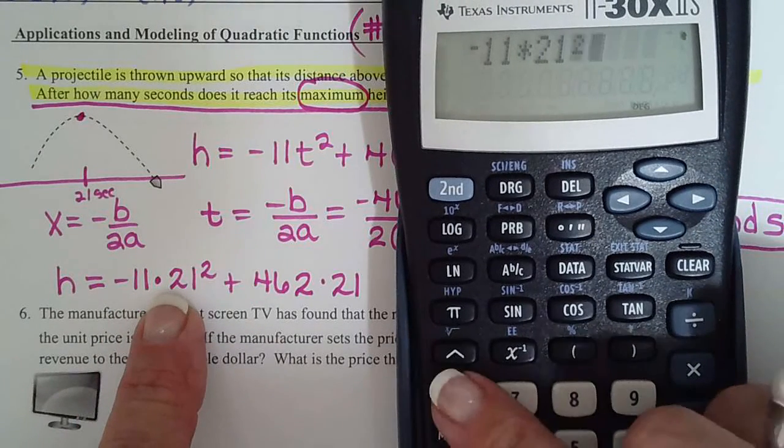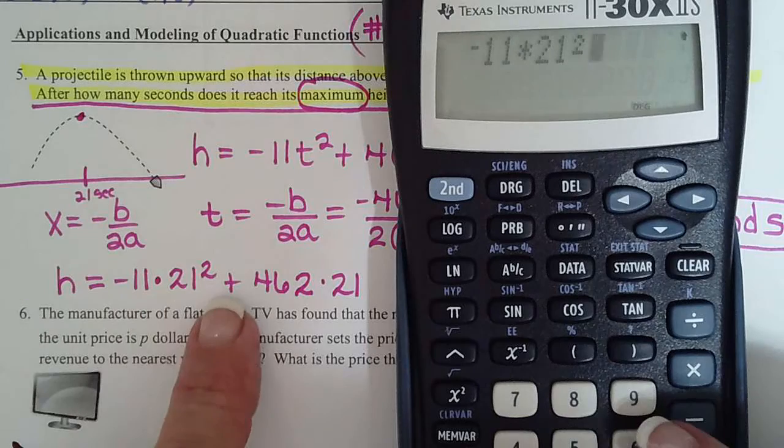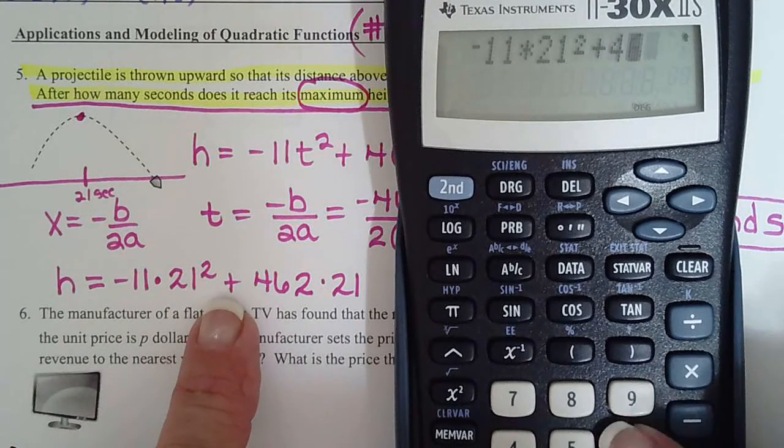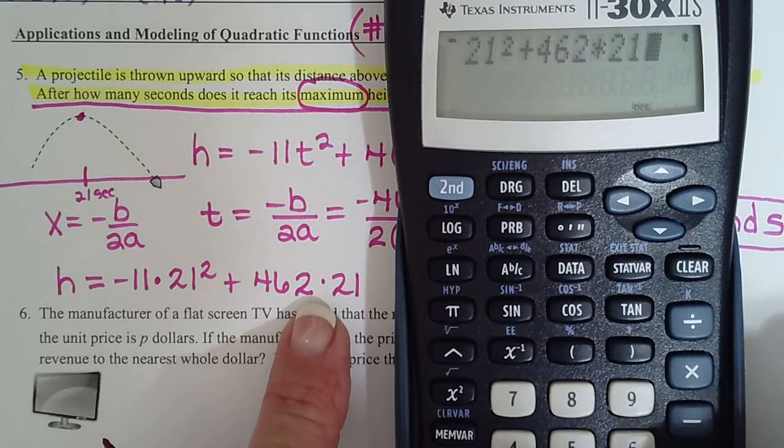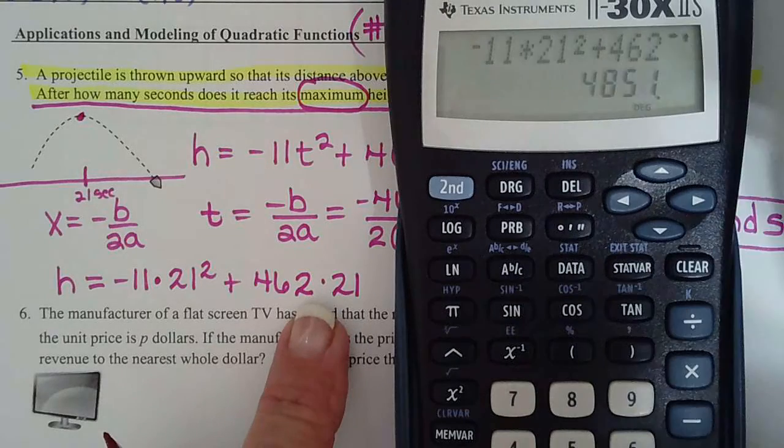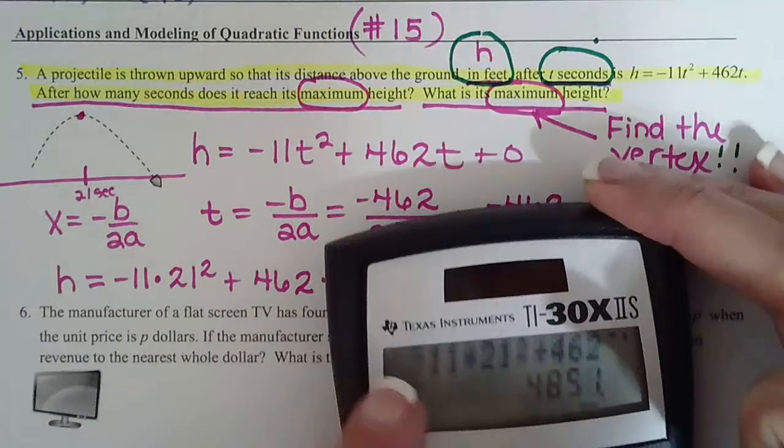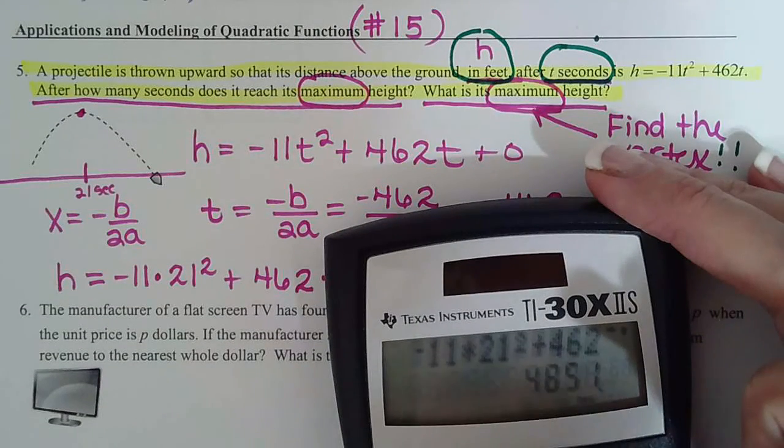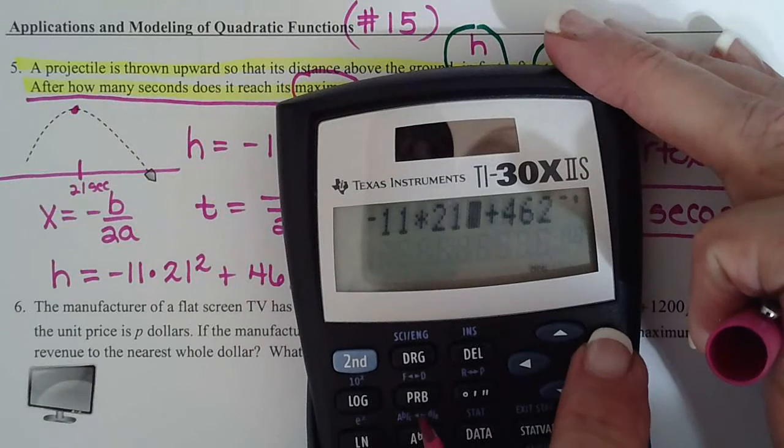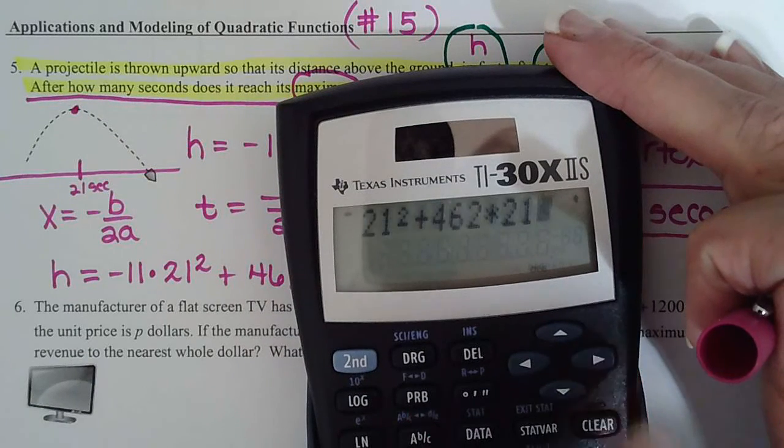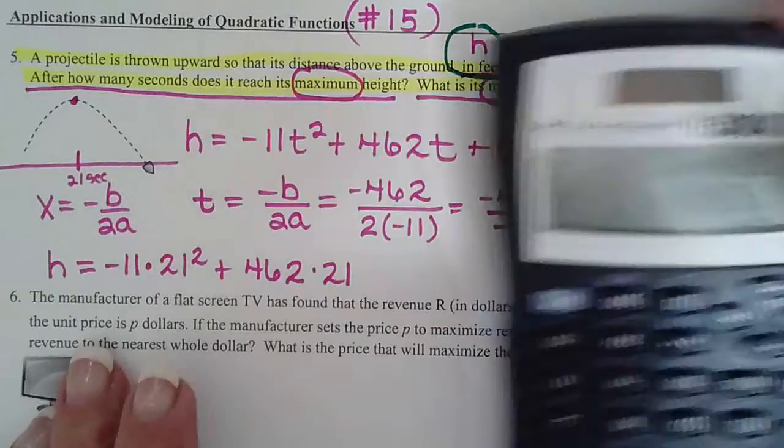So we have negative 11 times 21, and then hit your x squared button, plus 462 times 21. I'm just going to go back through my screen just to make sure everything's okay: 21 squared plus 462 times 21, yep, 4851.